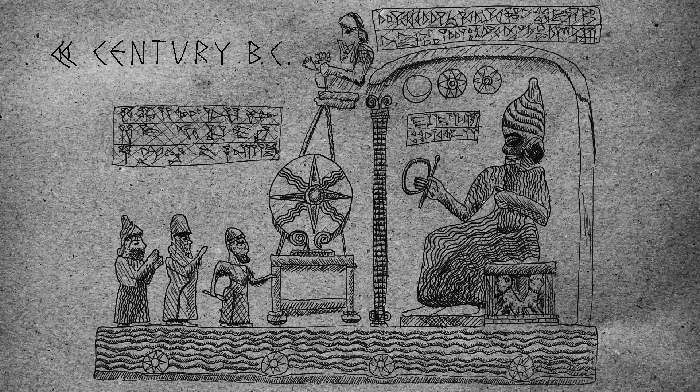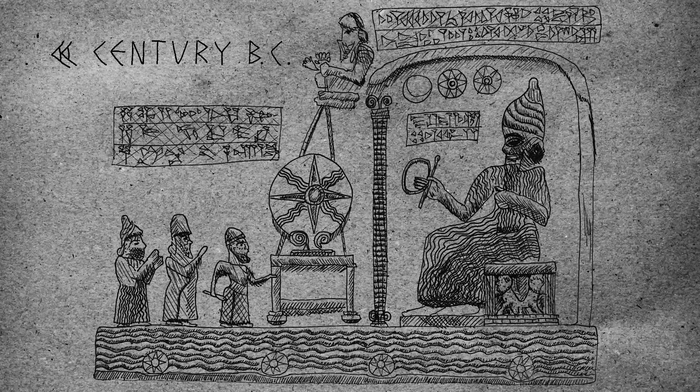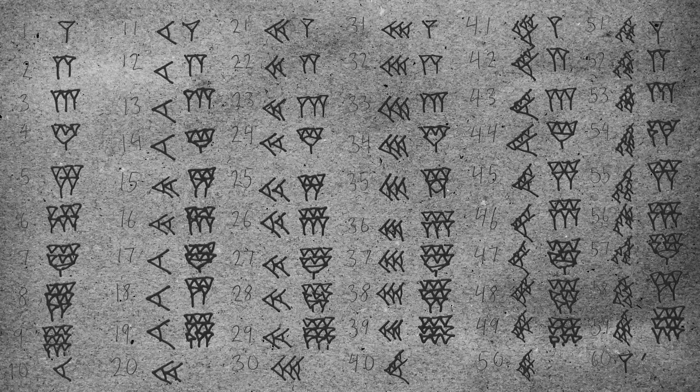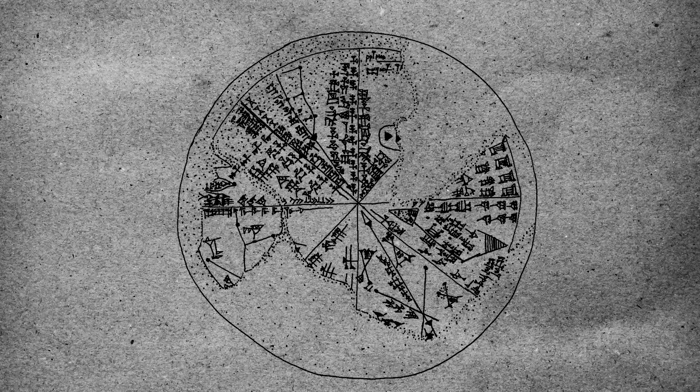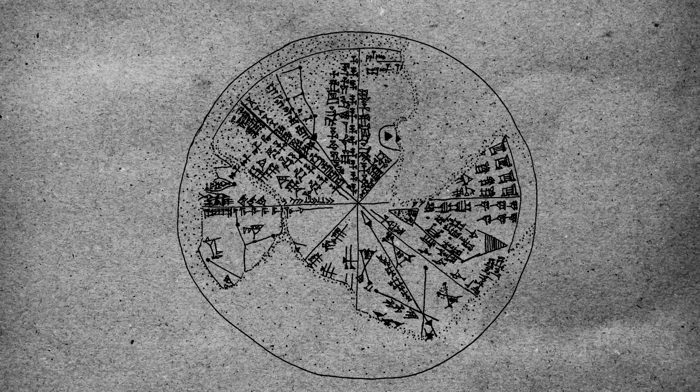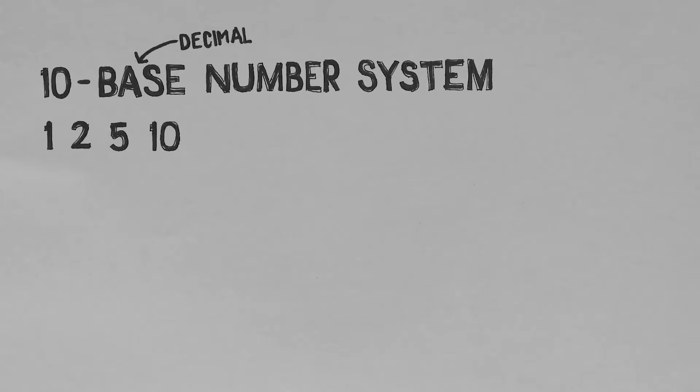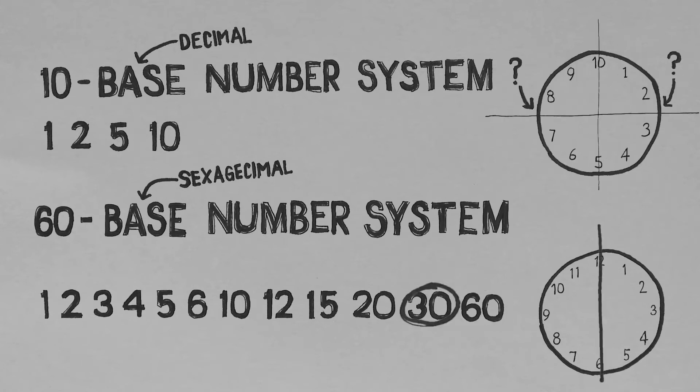humans of this period regarded day and night as two opposing realms instead of parts of the same day. Around the 20th century BC, Sumerians had developed the sexagesimal or base 60 number system that the Babylonians used to make astronomical observations.